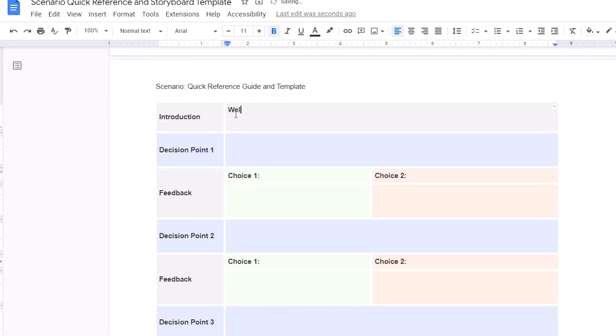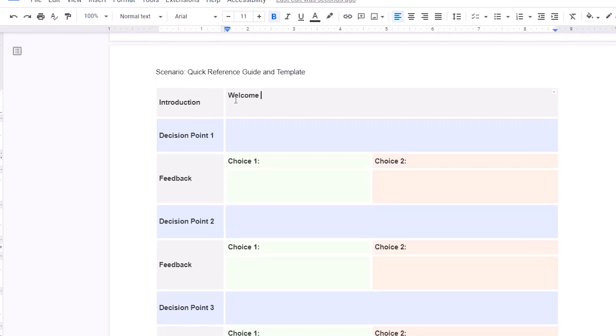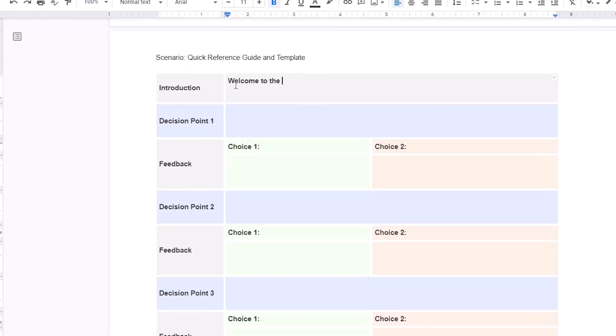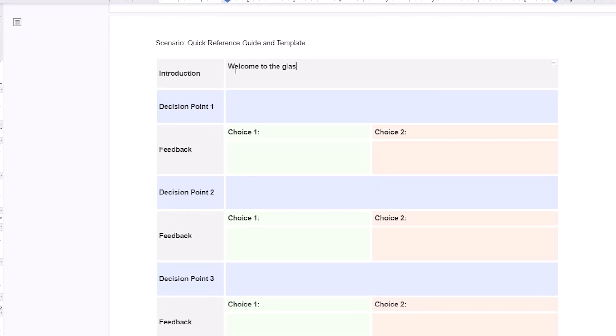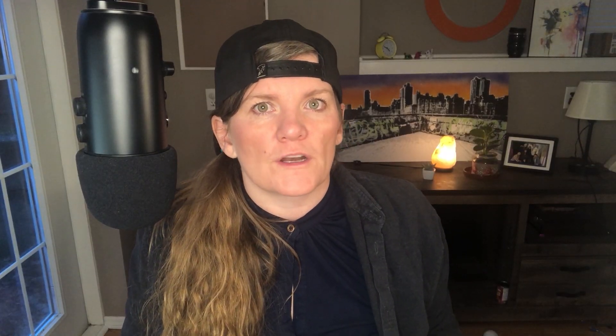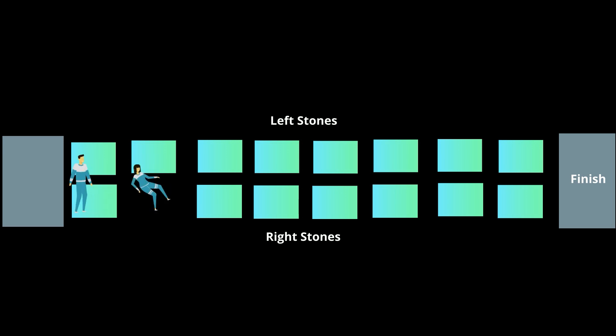To write my story and plan the decision points, I just simply use Google Docs. You can find my template in the description. The decision points in this scenario are where learners must make a choice that affects the outcome of the story. My glass bridge scenario has 8 decision points.